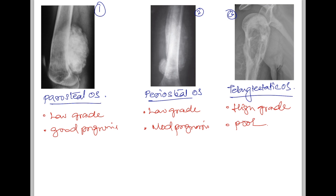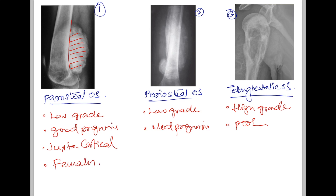Parosteal osteosarcoma occurs on the surface of the bone — it is also known as the juxtacortical type. The juxtacortical type usually arises from the posterior cortex of the femur, which you can clearly see here. It is more common in females. Periosteal osteosarcoma is the most common surface form of osteosarcoma and it usually arises in the diaphysis, whereas the lesion in our case is in the metaphysis.